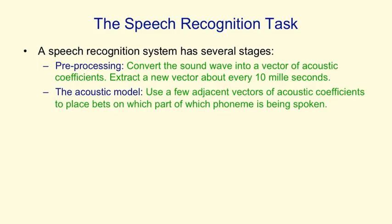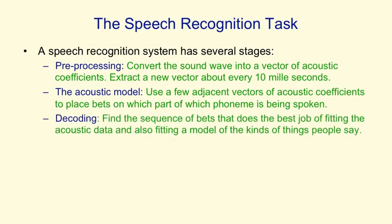They look at a small window and determine what the phoneme is and which part of the phoneme it is. A good speech recognition system will have many alternative models for a phoneme, and each model might have three different parts — so it might have many thousands of alternative fragments. You have to place bets on all those thousands of alternatives. Then there's a decoding stage that does the best job of piecing them together into a sequence that corresponds to the kinds of things that people say.